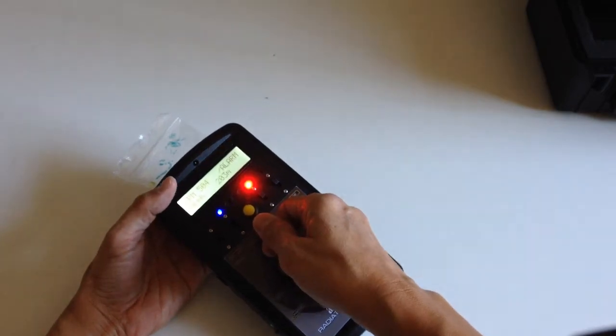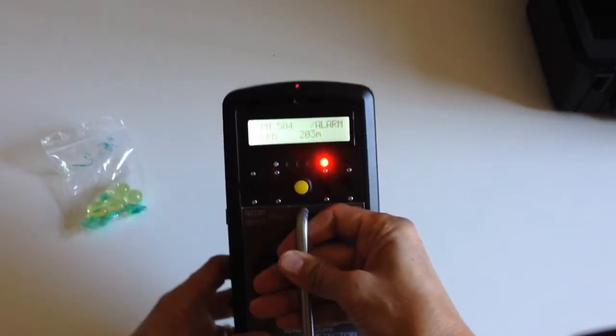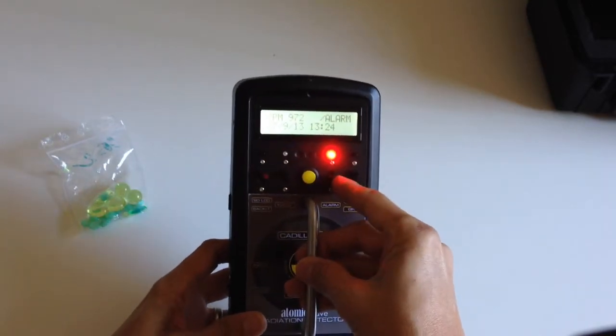I'm gonna have it set at 150 CPM for the alarm. You can see there's the alarm going off and then there's the mute for the alarm.